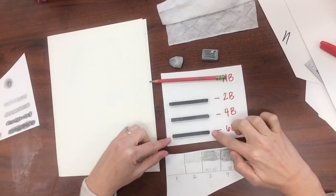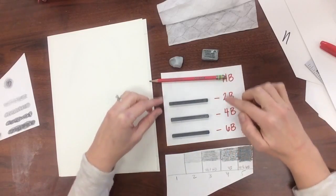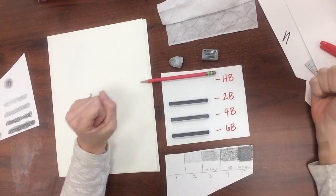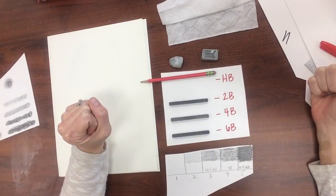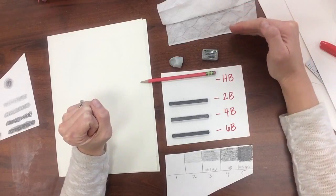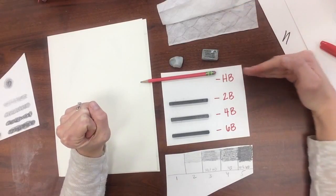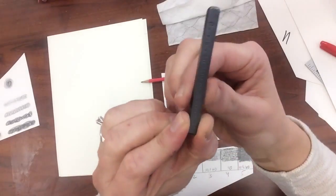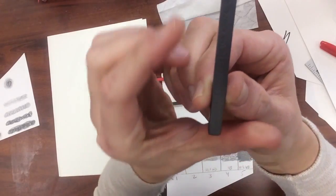4B, 2B, so from soft to hard. And actually there is such a thing as 2H, 4H, and 6H, which gets even harder and those would be above the HB. So HB is the middle. If you take a close look on the graphite stick, you can see the 4B right here.